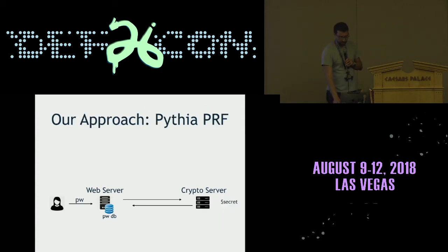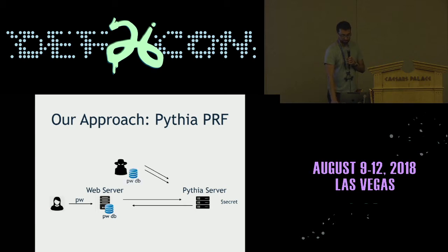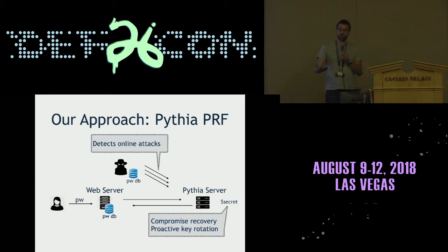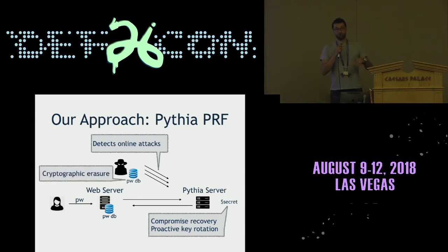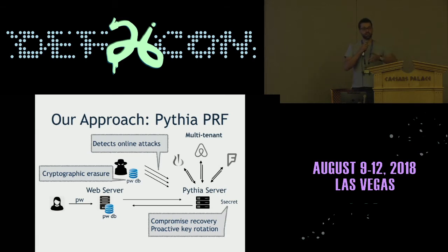For the rest of this talk I'm going to leave behind the state of the art and talk about our contribution. We like this architecture, so we're going to start with it. I'm going to rename the crypto server to the Pythia server and fix those problems. We're going to change the API in a way that allows the crypto server to detect online attacks. We're going to build in support for key rotation, which will allow us to recover from compromises and proactively rotate keys, and when we rotate keys it will allow us to cryptographically erase information that's been stolen. Finally we want to design a modern multi-tenant web service that allows even small companies to take advantage of this system.